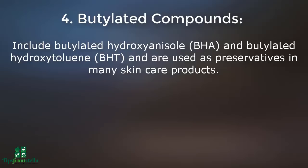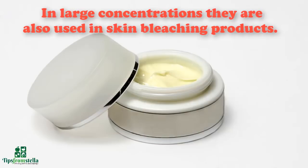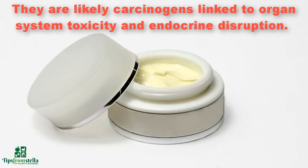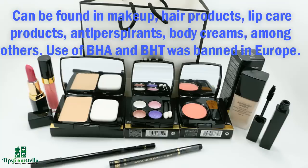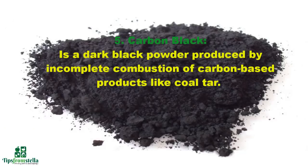Number four: butylated compounds. These include butylated hydroxyanisole (BHA) and butylated hydroxytoluene (BHT), used as preservatives in many skincare products. In large concentrations they are used in skin bleaching products. They are likely carcinogens linked to organ system toxicity and endocrine disruption. They can be found in makeup, hair products, lip care products, antiperspirants, and body creams. Use of BHA and BHT was restricted in Europe.